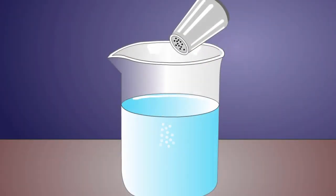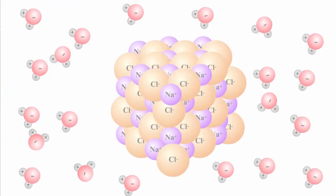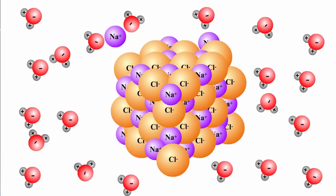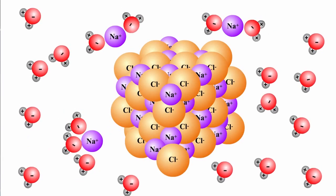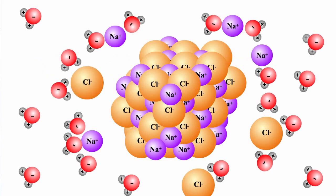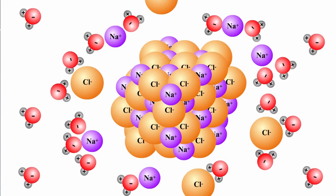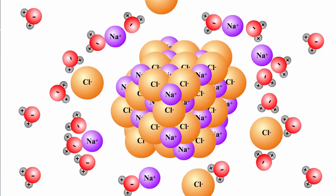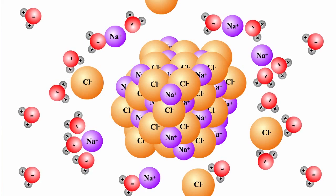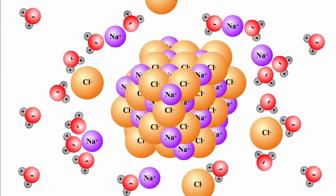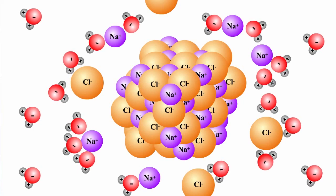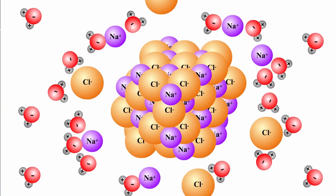When a salt, such as sodium chloride, is placed in water, the negative ends of the water molecules are attracted to the positively charged sodium ions, and the positive ends of the water molecules are attracted to the negatively charged chloride ions. This attraction causes the sodium and chloride ions to break up, or dissociate, in water.